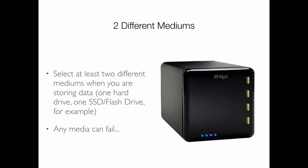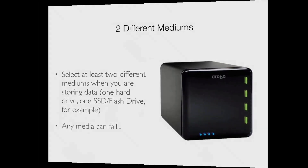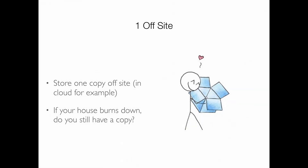I hope that by talking about this I've convinced you it will happen. So: two different mediums, because any media can fail. And the third part of 3-2-1: one copy should be off-site, in the cloud, somewhere that's not with you. So if you lose your laptop, somebody steals it, or your house burns down, your data is not lost with it.